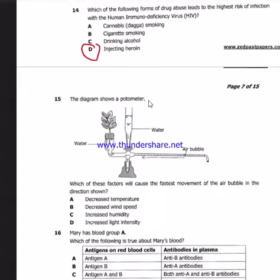Question 15: The diagram shows a potometer. Remember a potometer is a device that is used to measure the rate of transpiration. Which of these factors will cause the fastest movement of the air bubble in the direction shown? You can see that the direction of the bubble is going in that direction. Decrease in temperature: higher temperature increases rate of transpiration, lower temperature decreases, so there is no way decrease in temperature can do anything to the air bubble. Decrease in wind speed: the more wind blows, the higher the rate of transpiration. So B also is out. Increased humidity: humidity is the increase in the amount of vapor present in the atmosphere. So if there is a lot of water in that atmosphere, there is no way more water can be needed in the atmosphere. So even C is out. Increase in light intensity increases the kinetic energy of the particles, hence they move faster.